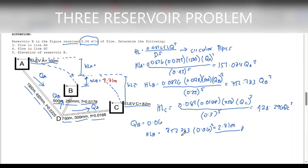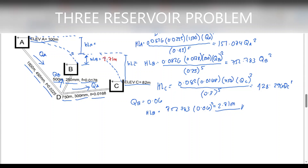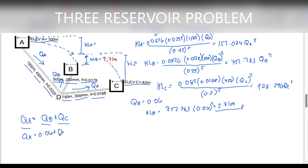Since we know the direction of flow for each reservoir, we can conclude that QA is equal to QB plus QC. That means reservoir A actually supplies water to reservoir B and reservoir C. Since we have a value for QB, we can say QA equals 0.06 plus QC, or QC equals QA minus 0.06.